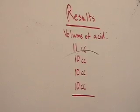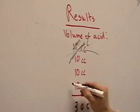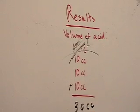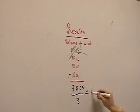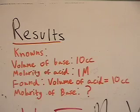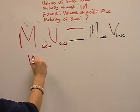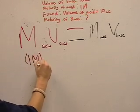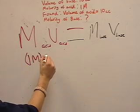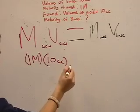Now let's look at our results. We get rid of the rough titration result because that was less accurate. We see that our results were very consistent. We add them up: 10 plus 10 plus 10 equals 30 cc's divided by 3, giving us an average amount of acid of 10 cubic centimeters. We can now use the equation: molarity of acid times volume of acid equals molarity of base times volume of base, to find the unknown molarity of the base.